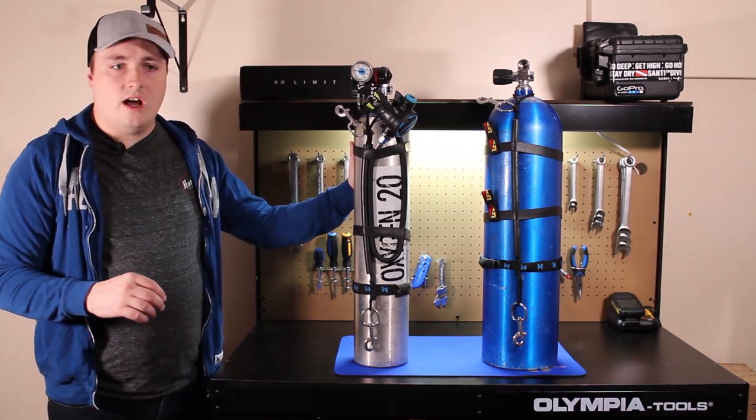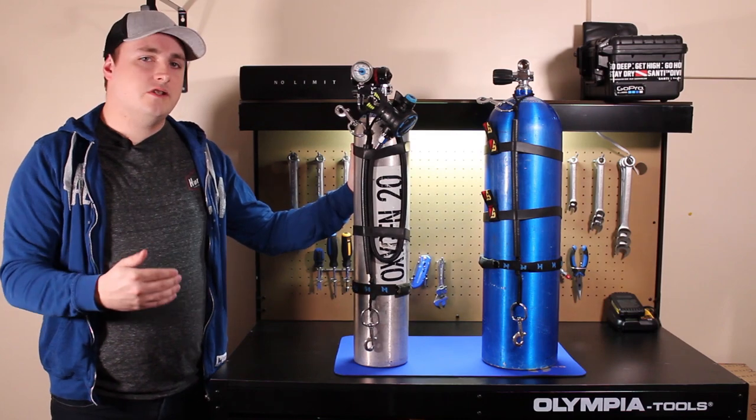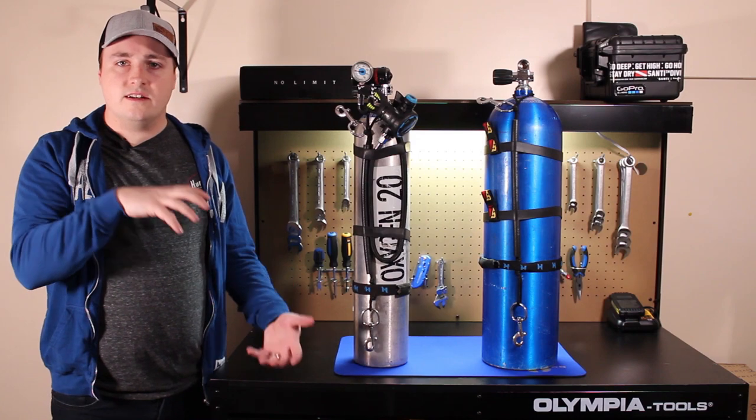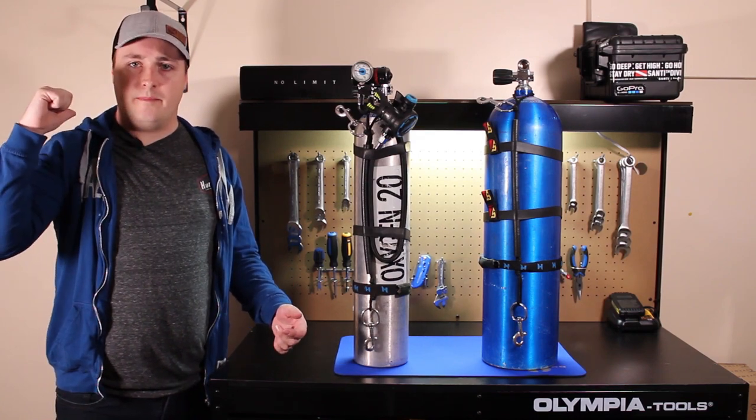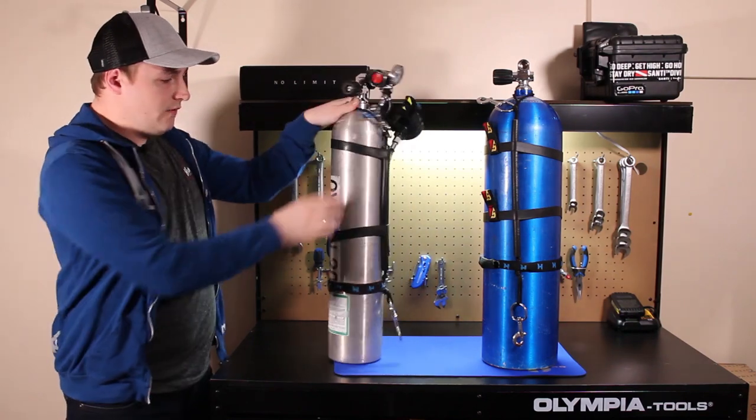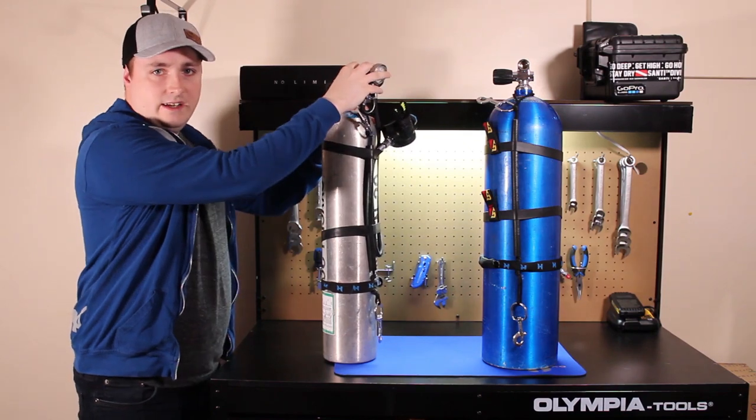A stage bottle has three main components to it. The simplest definition of a stage bottle is a self-reliant independent air source. This is a redundant air source separate from your primary back gas. There's three main components: the cylinder, the stage rigging kit, and the regulator.